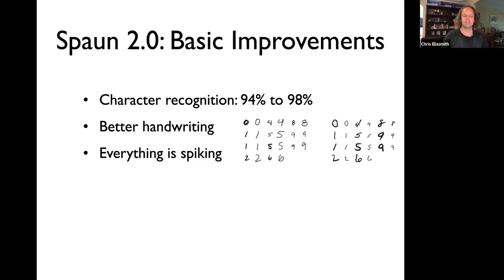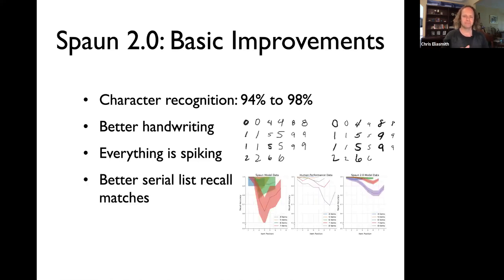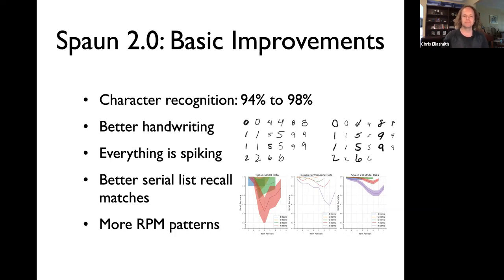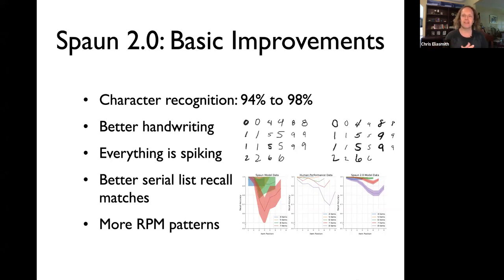Everything in SPAWN 2.0 is spiking — there were some non-spiking parts of the motor system in the previous model. We have better matches to serial list recall: give it a set of digits and have it recall them back, and the match to human performance is improved. There are also more RPM patterns — SPAWN 1.0 could do Raven's Progressive Matrix-like problems, an intelligence test, but when we threw other kinds of patterns at it, it would fail. We've extended its ability to recognize RPM patterns.